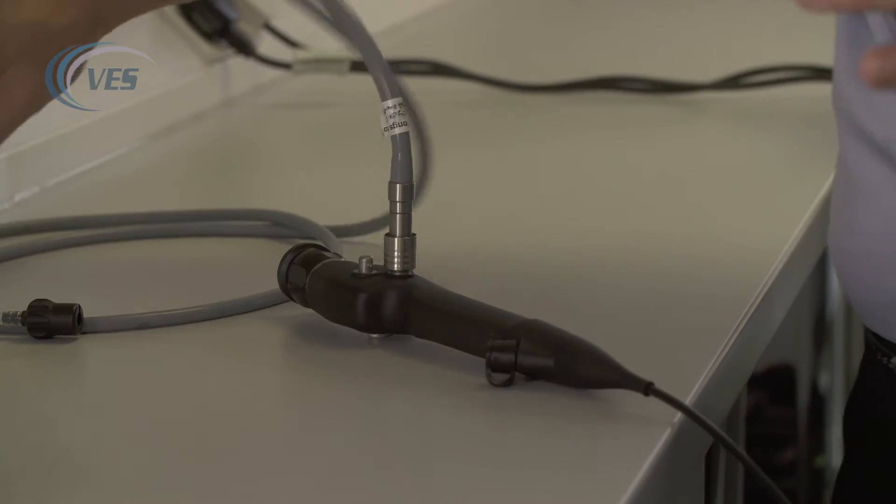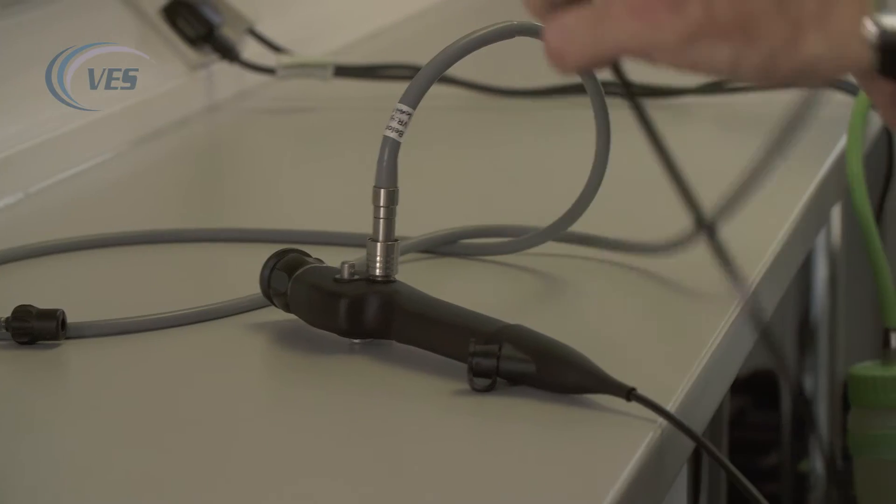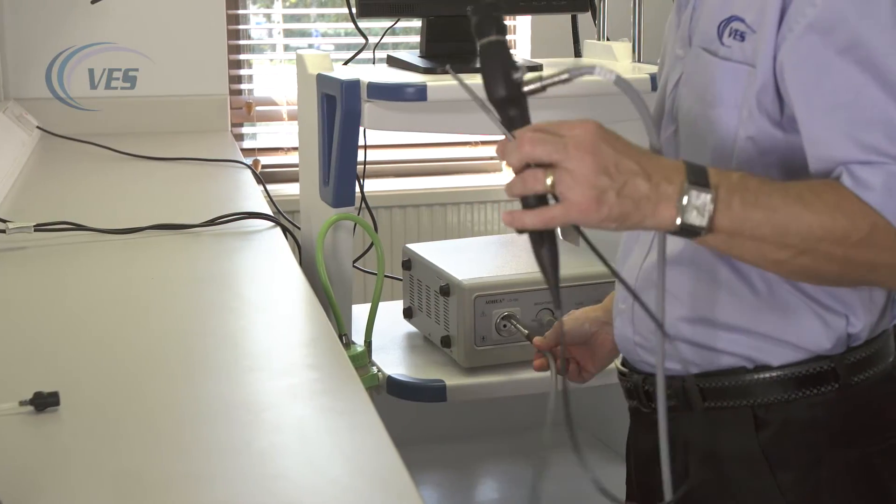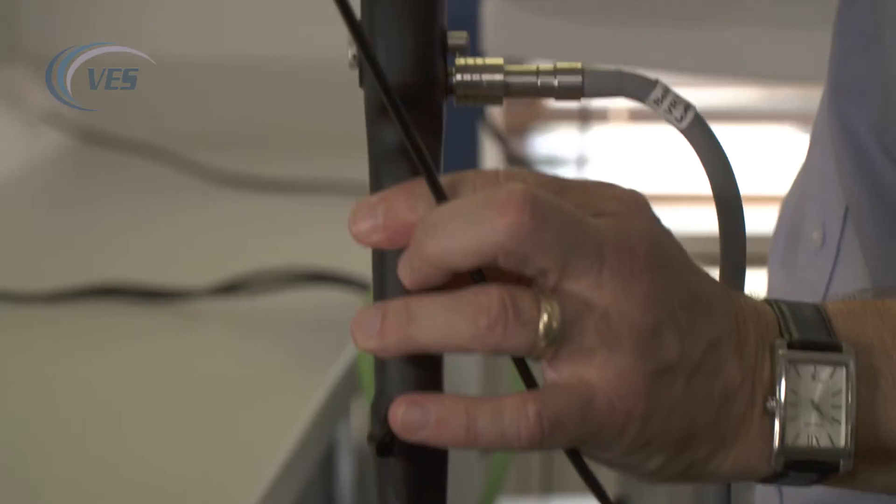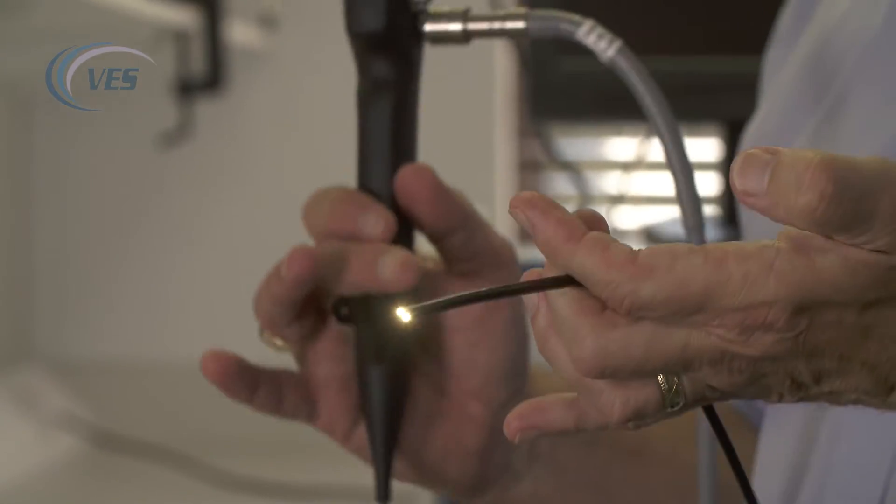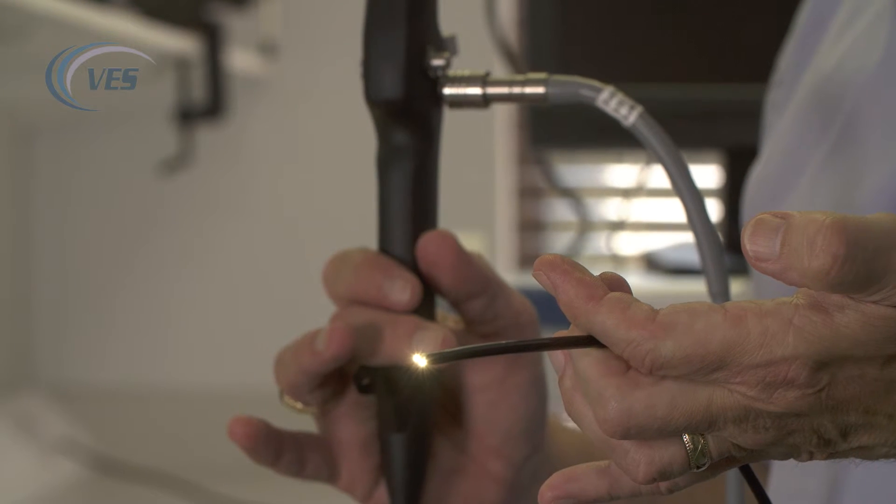And that goes into your light box. Turn your power on, and there you have the light coming through the end of the scope.